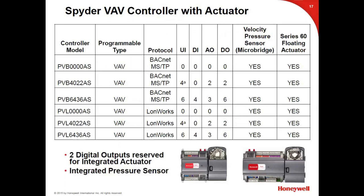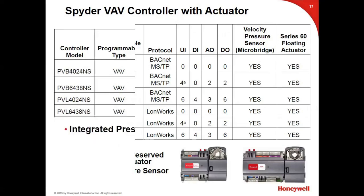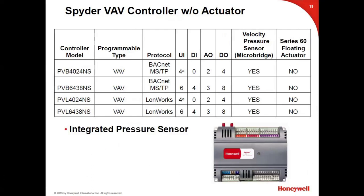Here are the VAV controllers — BACnet and LON — shown on one chart. The part number naming convention: 'P' means programmable; the second character is either 'U' for unitary or 'V' for VAV; the third character is 'L' for LON or 'B' for BACnet. The four digits after the letters identify the I/O: universal inputs, digital inputs, analog outputs, and digital outputs. For example, PVB-4022-AS has four universal inputs, zero digital inputs, two analog outputs, two digital outputs, an airflow pickup sensor, and an actuator ('A'). 'N' means no actuator.